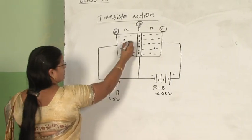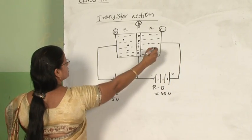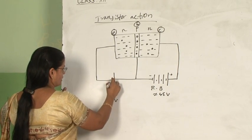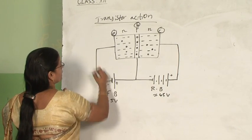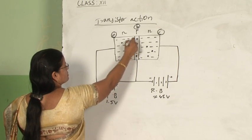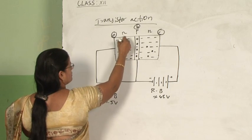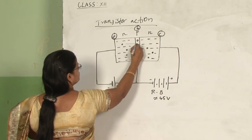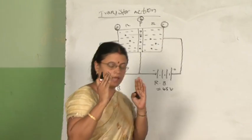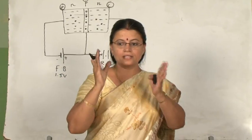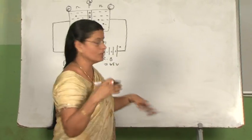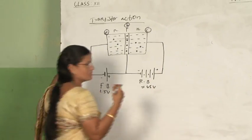Now we will see how the transistor functions. In forward biasing, the negative terminal of the cell will repel the majority carriers — that is, negatively charged electrons. These electrons will try to move towards the base region. Whatever I am saying, you have to visualize. When I say electrons are moving, please see in front of you that electrons are moving — then you can understand very easily. Visualization is very important.